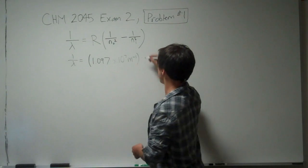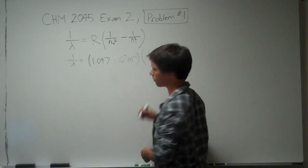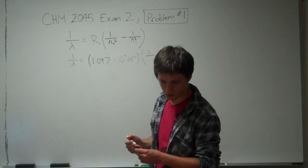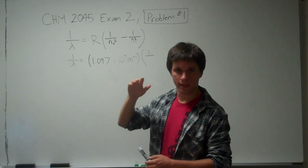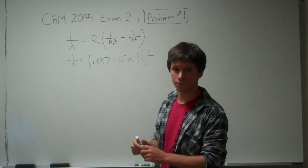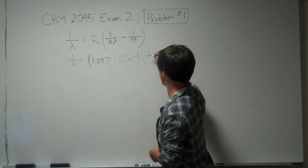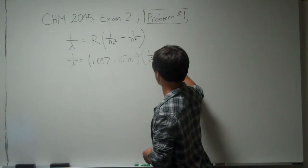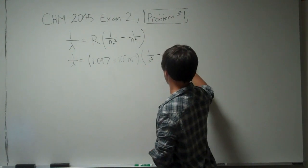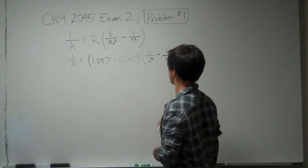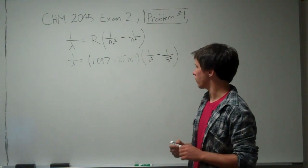And that's times 1 over the final state. The problem says that it drops from n equals 5 to n equals 2, so the final state is going to be 2. So we have 1 over 2 squared minus 1 over 5 squared, because that was the initial state.